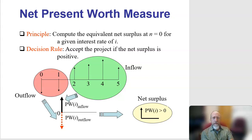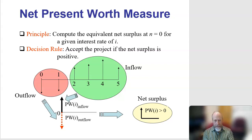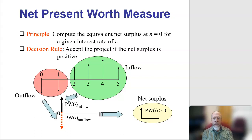For the net present worth, you're going to have money going out — typically early in the project. You would hope that as the project progresses, your inflows will be more than your outflows. You can calculate those surpluses, hopefully. You look to see if that net surplus is positive, but remember you want the present worth of those flows.